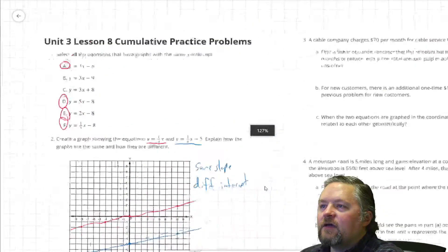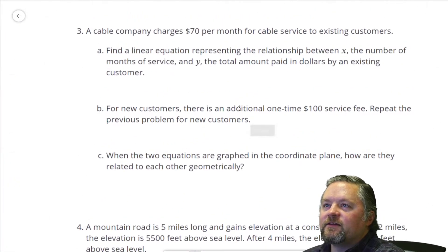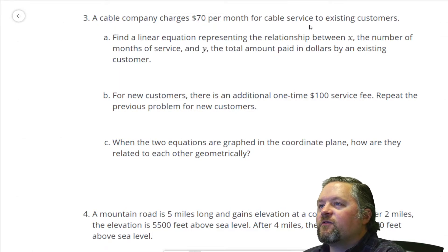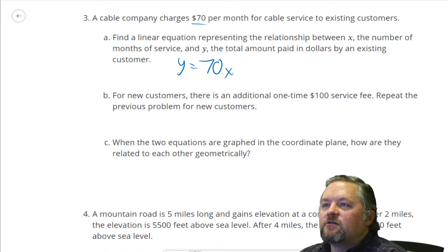Okay. What's next? Ooh, cable company. I like to watch TV. Cable company charges $70 a month for cable service to existing customers. Find a linear equation representing the relationship between x, the number of months of service, and y, the total amount paid in dollars by an existing customer. So, our rate of change, our slope, is $70. So, this is y equals 70x. $70 per month.